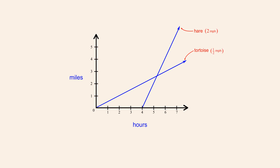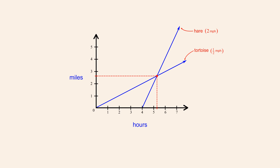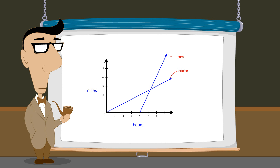Since the hare travels at a faster rate than the tortoise, the hare's graph has a greater slope. Looking at these two graphs, we see that throughout the race the tortoise's distance increases linearly with time, and after four hours of elapsed time the hare's distance also increases linearly — until at some point between five and six hours after the race has begun, the hare and tortoise meet. The point where the two graphs intersect represents the instant at which the tortoise and the hare are at the same place at the same time.